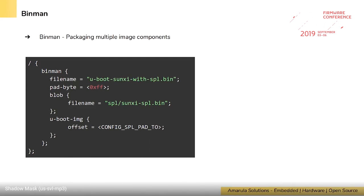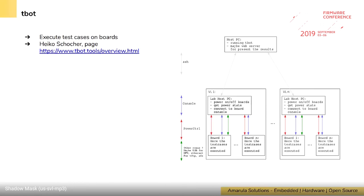For regression testing and continuous integration — similar to what Linux has — we have a simple tool called 'labboard' where you can run continuous integration tests on-target using scripts. This tool is still in development and requires more testing and new features.